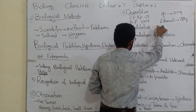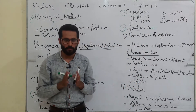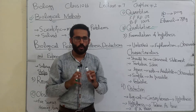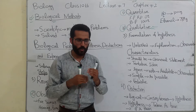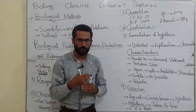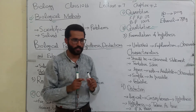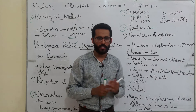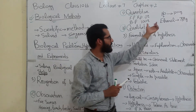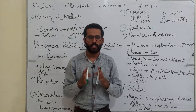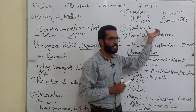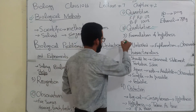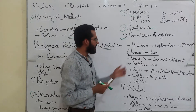In case of qualitative observation, we cannot write this observation in the form of numerical values. We just observe — like smell, taste, touch — these are qualitative observations that we judge. Like saying the freezing point of water is lower than the boiling point, or the weight of water is higher than the weight of ethanol — these are qualitative observations. We cannot write these observations in numerical form. So the 3rd step in solving the biological problem is formulation of hypothesis.